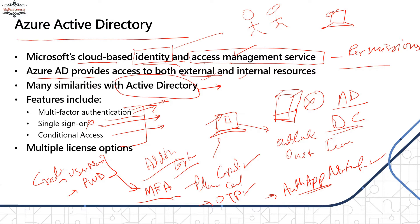MFA ensures the person accessing the resource is the legitimate owner. So even if your password is leaked, the attacker won't gain access because they'd need to pass MFA — an OTP or authenticator notification comes to you. Azure Active Directory gives you the option to set up Multi-Factor Authentication for user identities.